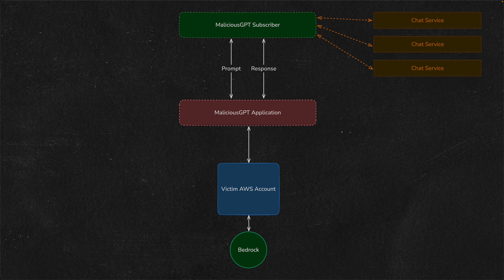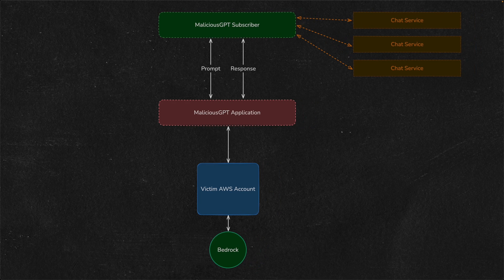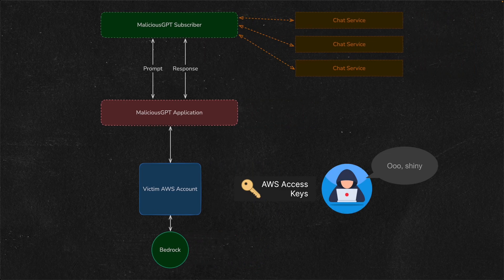Users can then chat with these bots on websites hosting them to do all sorts of different role-playing. Fortune even wrote an article about this if you'd like to learn more. So instead of having to pay out of pocket to run these explicit role-playing markets, attackers scan the web for leaked access keys to different cloud accounts.